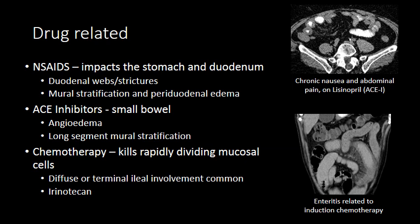Chemotherapy can result in enteritis by disrupting cell division of the mucosa, which is one of the more rapidly dividing cell populations in the body. When the mucosa is damaged, transmural migration of small bowel flora can cause inflammation and even bacteremia. One of the most common chemotherapy agents to cause enteritis is irinotecan, a common agent used to treat colon cancer.